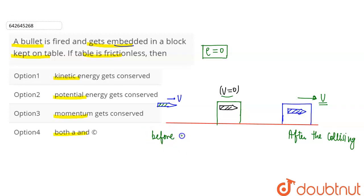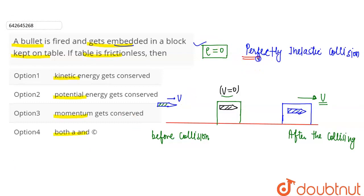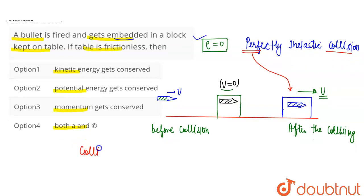Before the collision, the block was placed on the table with coefficient of friction zero, meaning no friction force acts. The bullet came, collided with the block, and remained embedded inside it. After the collision, both move with common velocity — this means it is a perfectly inelastic collision. In perfectly inelastic collision, after the collision both bodies move with the same common velocity.